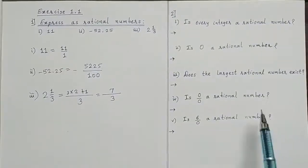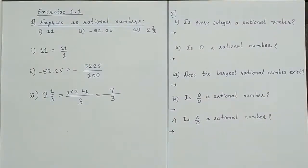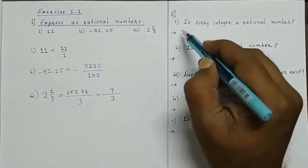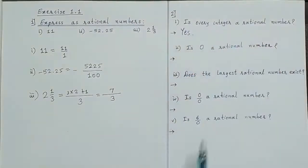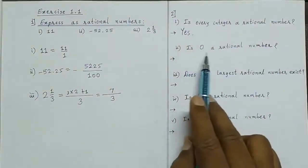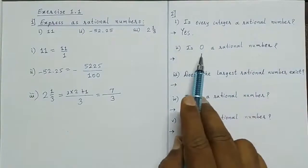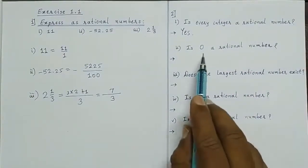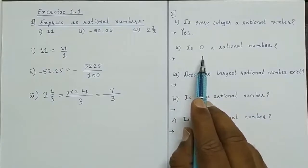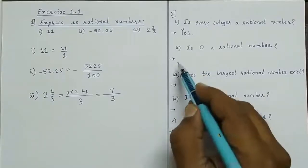Second question asks: is every integer a rational number? Yes, every integer is a rational number. Is 0 a rational number? Yes. 0 means 0 upon 1. Since 0 is an integer and denominator 1 is also an integer, the answer is yes.